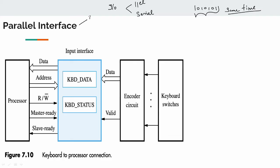Let's look at two examples: the keyboard and the display. The keyboard diagram has a few units: the processor, interface unit, encoder circuit, and keyboard switches. So in this diagram, how does the processor connect to the keyboard?